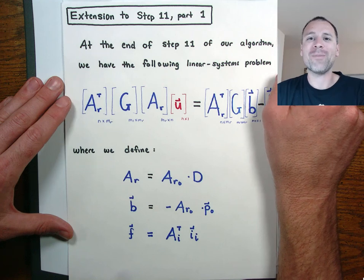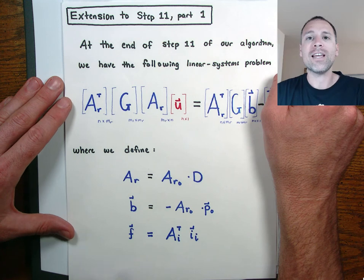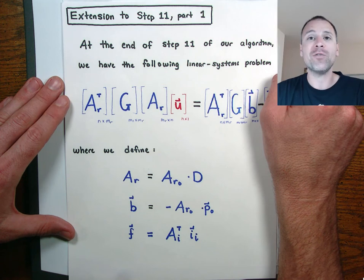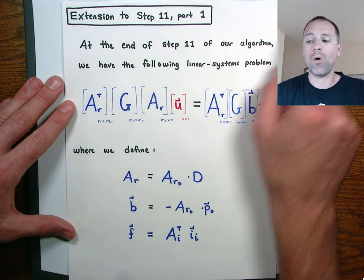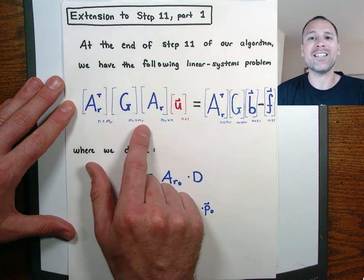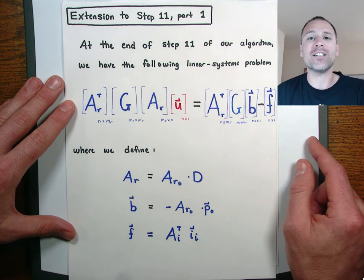Welcome back, hard-working mathematicians. In this video we're going to extend our work in the LANA algorithm for step 11. Specifically, we're going to start a sequence of four extension videos to describe why the coefficient matrix that arises out of steps 1 through 11 is indeed non-singular.